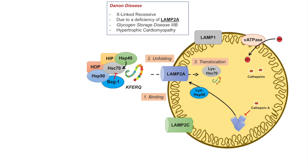Since LAMP2A is so important, what about LAMP2B and LAMP2C? LAMP2B has not been well characterized at this point. However, LAMP2C has been shown to play a role in RNA and DNA degradation, and this process is HSC70 independent — it does not require the chaperone complex that classical CMA requires. LAMP2C has a cytosolic tail that allows it to bind to RNA and DNA, leading to their translocation into the lysosome for degradation.